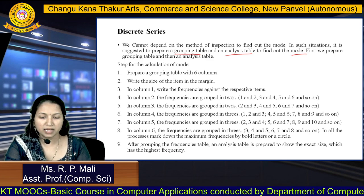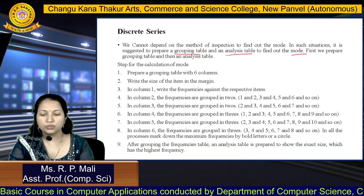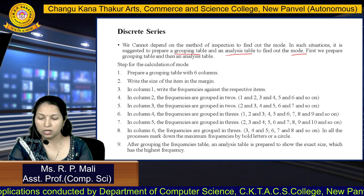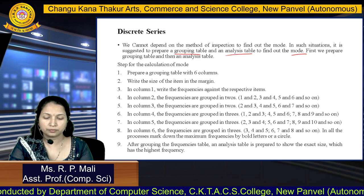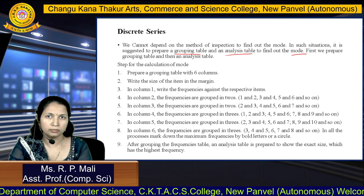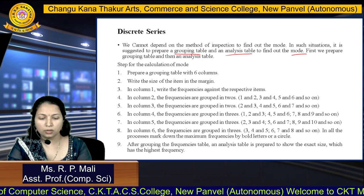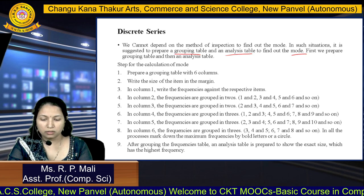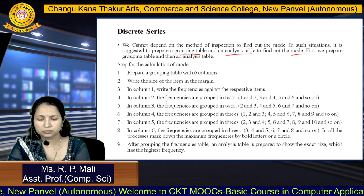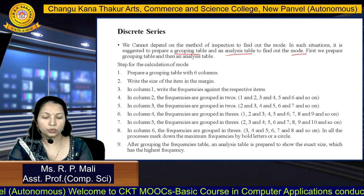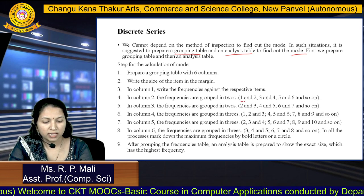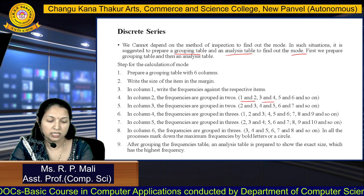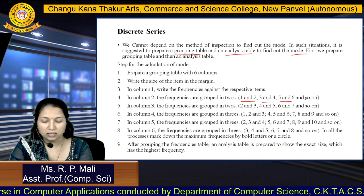The steps for the grouping table are: first, prepare the grouping table with 6 columns and write the size of items in the margin as a 7th column. In column 1, write all the frequencies against the respective items. In column 2, group the frequencies in twos — add the 1st and 2nd frequencies, then 3rd and 4th, then 5th and 6th, and so on. In column 3, skip the first frequency and group the remaining frequencies in twos: add 2nd and 3rd, then 4th and 5th, then 6th and 7th, and so on.